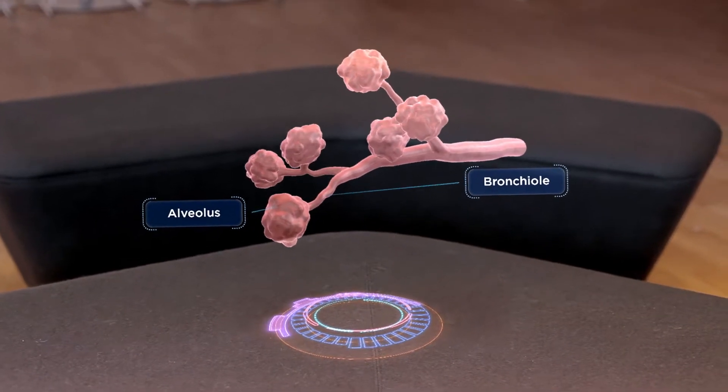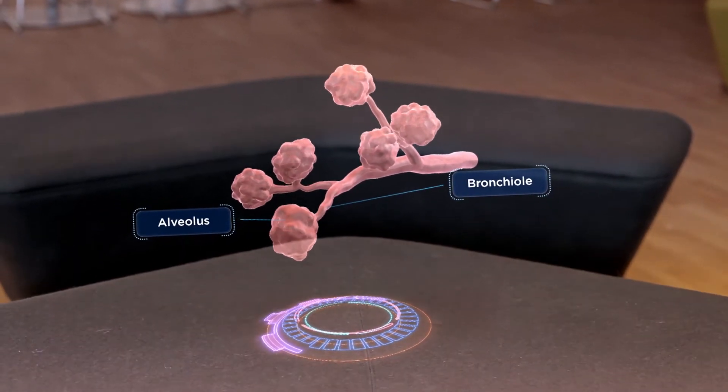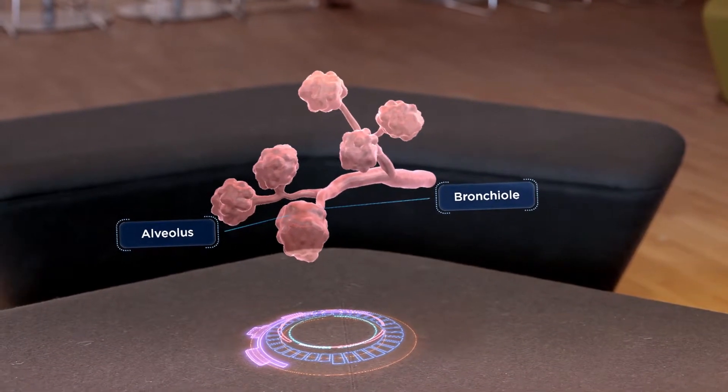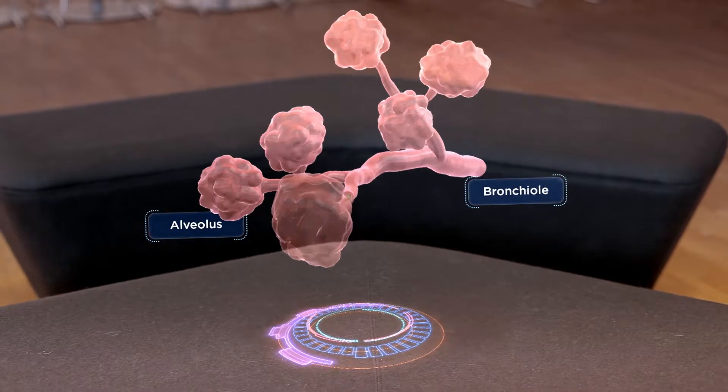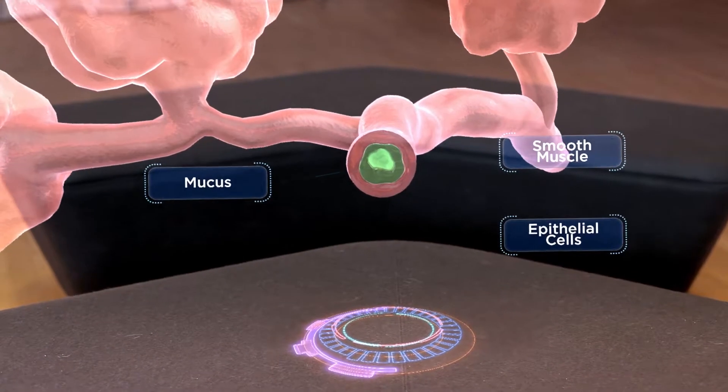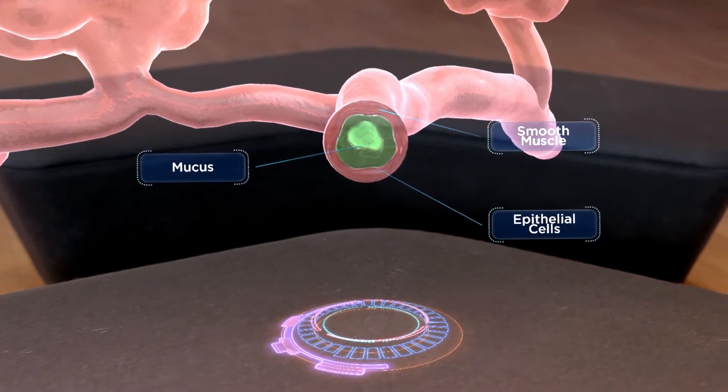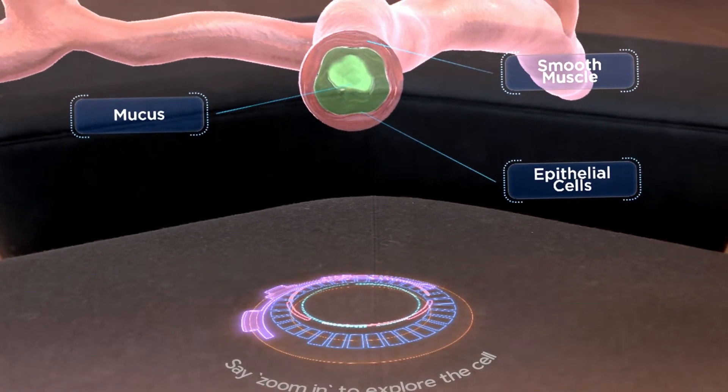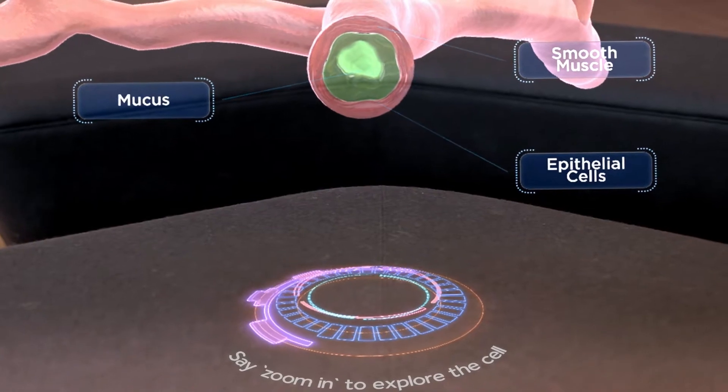Now we see the alveoli in the lung. These structures are lined with epithelial cells that produce mucus. When these cells are defective, water balance is altered, resulting in the thick and sticky mucus we can see now. To understand how these cells become defective, we must move deeper, to the cellular level. Zoom in.